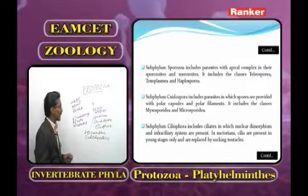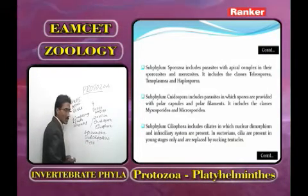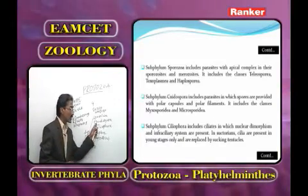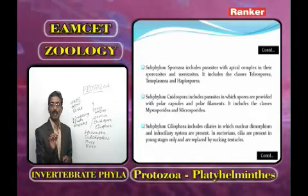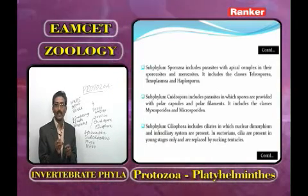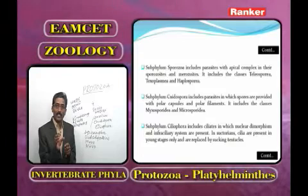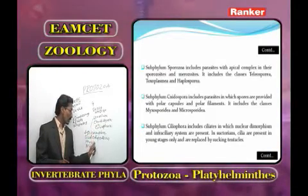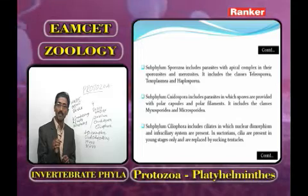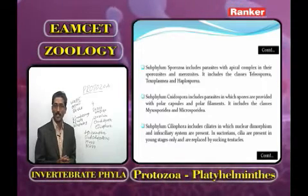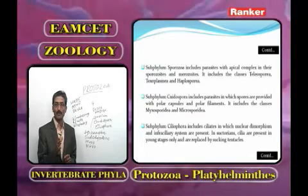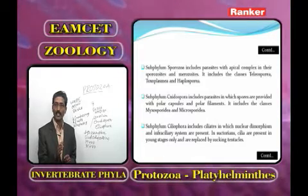Cnidospora is classified into two classes: Myxosporea and Microsporea. The characteristic feature of Cnidospora is the presence of polar capsule and polar filaments, which help for attachment to the host body. In Myxosporea, example is Myxobolus. In Microsporea, example is Nosema notabilis — the best example of hyperparasitism, as Nosema lives as a parasite on another parasite.